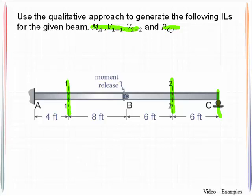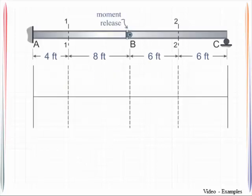The qualitative approach says that we are to sketch deflected shapes. We first insert a release for the response quantity of interest and then we sketch the deflected shape for that. So I will step you through that process for this particular case.